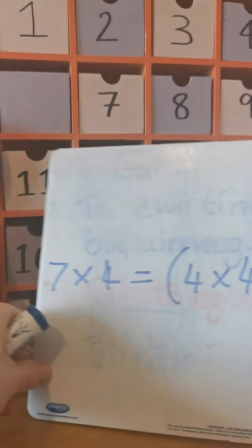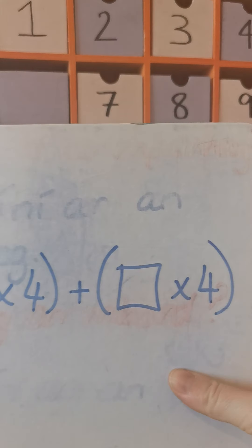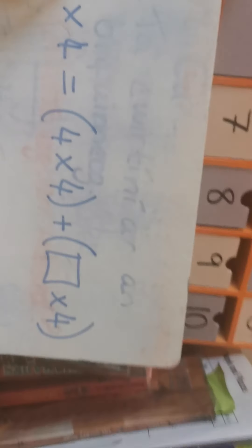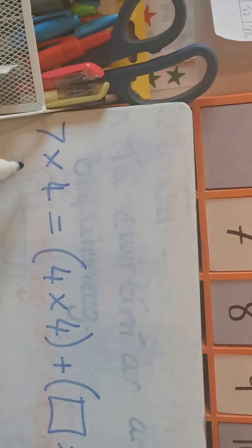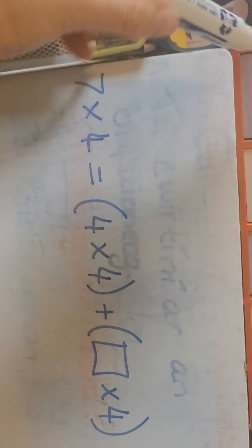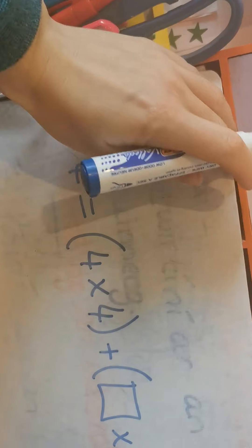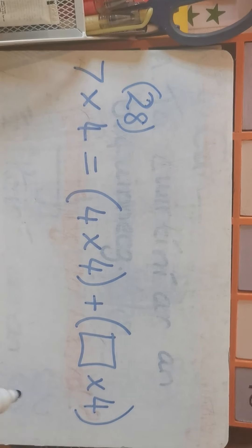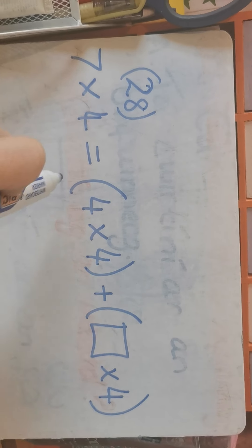Now the other one we're getting confused on is the ones that look like this. Everything that's on the left side of the equals has to equal everything on the right side. We know that seven multiplied by four gives us 28.